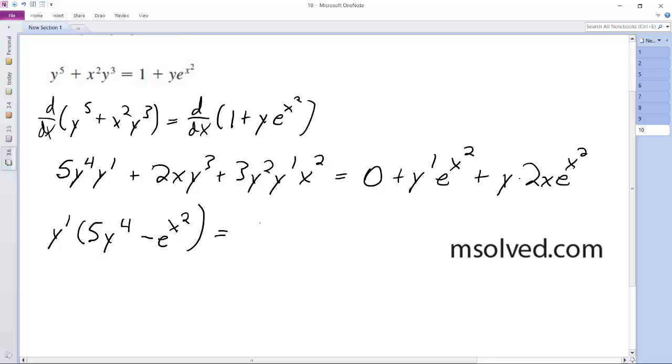is equal to y 2x e x squared minus 2x y cubed plus, oh, I made a mistake. I think we should have minus 3y squared x squared.